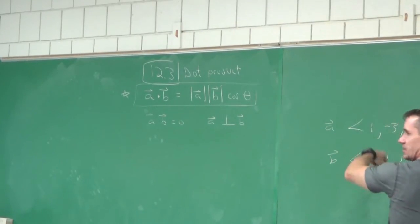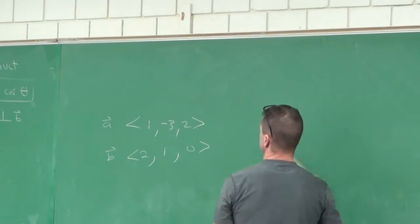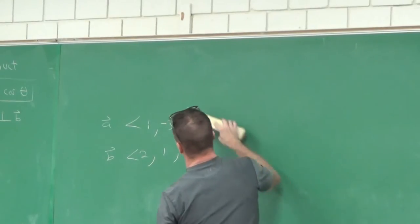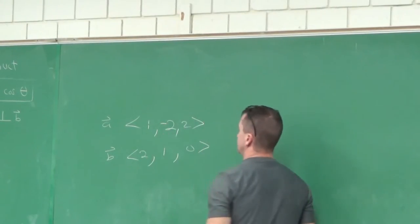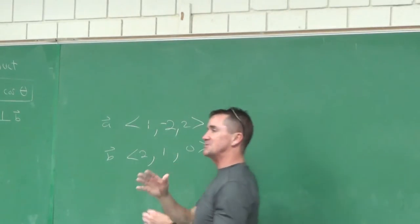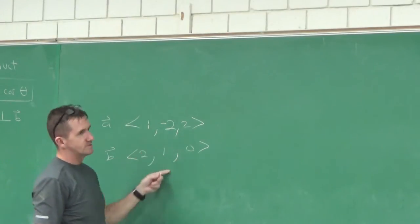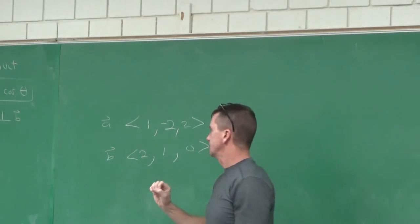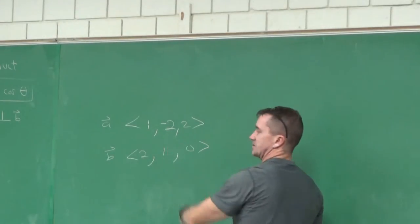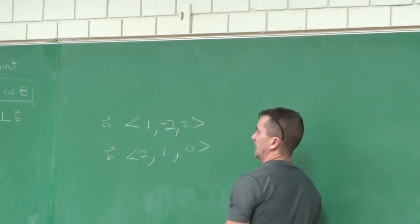Are these two vectors orthogonal to each other? No. We just saw it. These are in three-dimensional space — we're not even drawing them — but the angle between those two vectors would be 90 degrees, because the dot product is two plus negative two plus zero, which equals zero. So these two vectors are orthogonal to each other. The last two were not orthogonal.